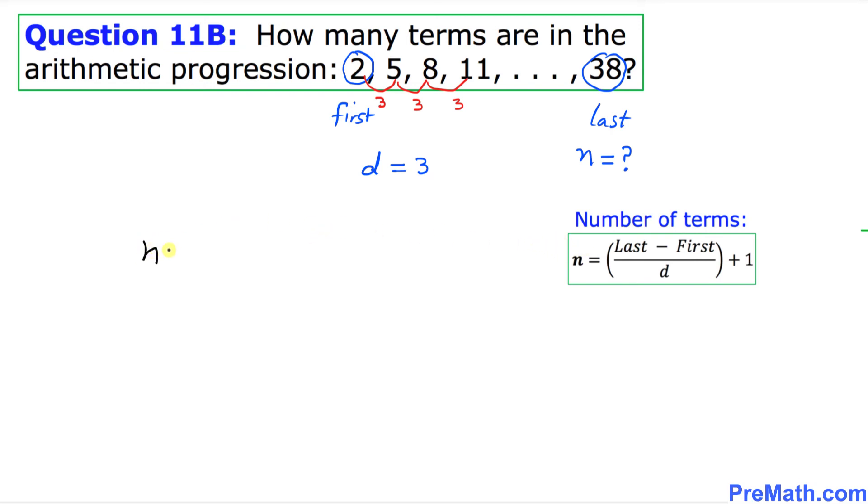So we want to find n equals our last term in our case is 38 minus the first term in our case is 2, divided by our common difference d, we know it is 3, and then we're going to simply add 1 to it.